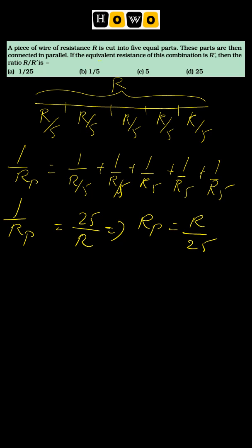So here we have R dash value as R by 25. So what is the ratio they are asking? The ratio of R upon R dash, so normal resistance upon this new resistance.